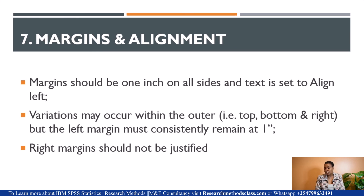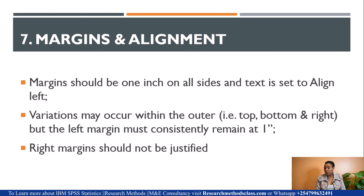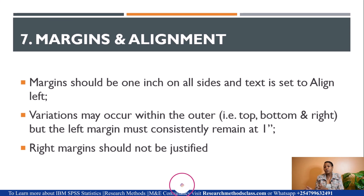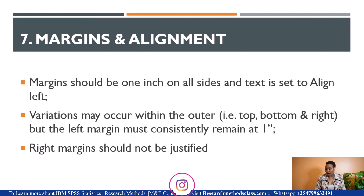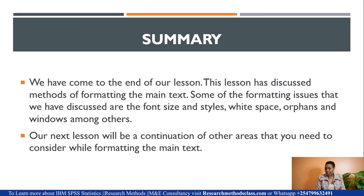Margins and alignment: margins should be one inch on all sides, and the text should be aligned left, meaning the right margin should not be justified. Do not justify your text — it should be aligned left. However, some institutions may have variations for the top, bottom, and right margins, so if your institution has given you other margin specifications, follow those. But the left margin must consistently remain at one inch.